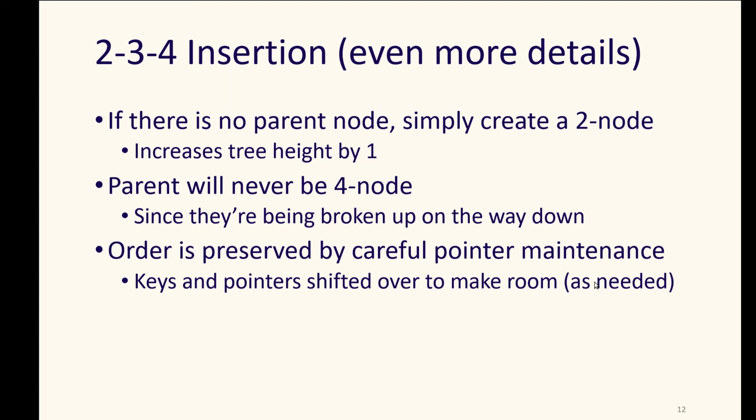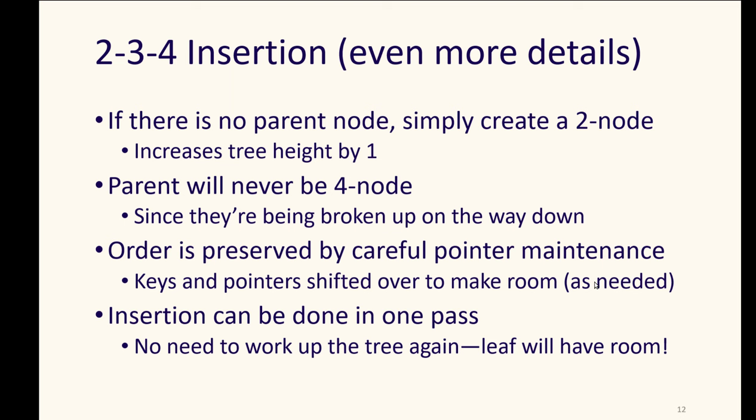This makes a 234 tree a little strange as trees go, because typically we think of trees as growing more leaves. We typically insert things that add to the bottom of the tree, but in a 234 tree, we're going to grow upward by creating those parent nodes when we have to split up four nodes. But insertion can be done in a single pass. There's no need to work back up the tree, because as we came down, we split any four nodes we saw to make sure that we would have room. This may lead to some wasted space, but it ensures that we can keep this nice feature of all the leaves being at the same level.